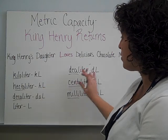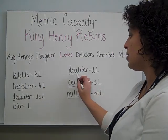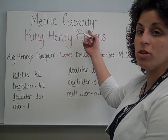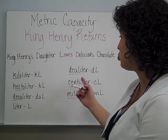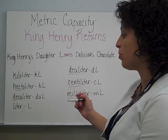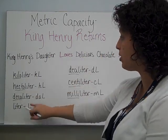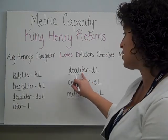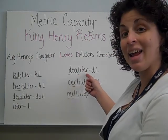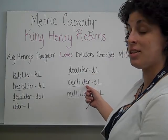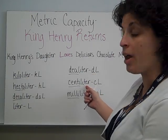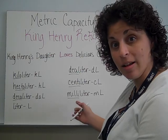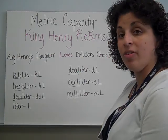Each of these units — same prefix, different ending — since we're measuring capacity, is just like before, built from liters or made from parts of liters. A deciliter would be one-tenth of a liter. A centiliter, one one-hundredth of a liter. A milliliter, one one-thousandth of a liter.